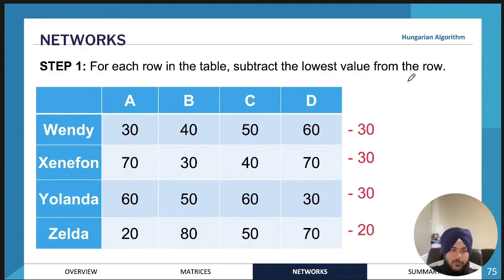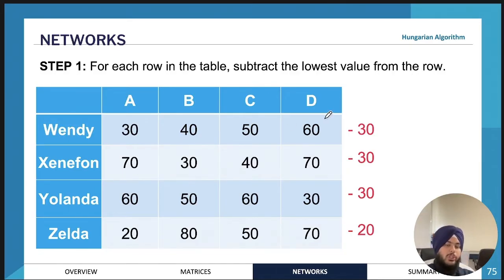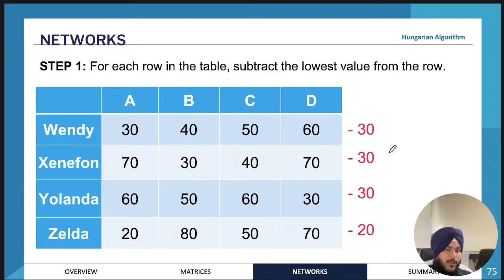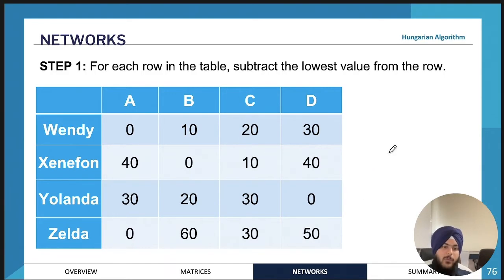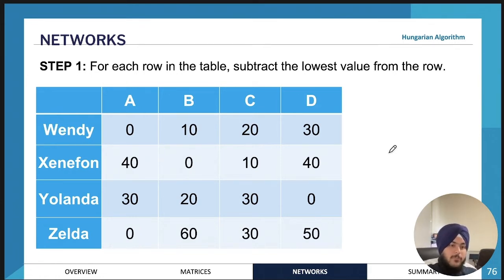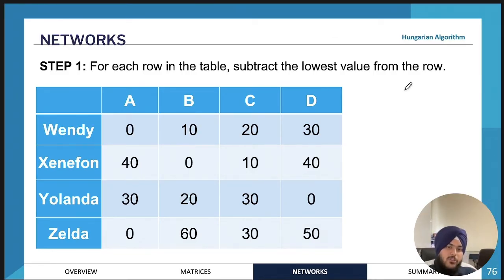Step one of the Hungarian algorithm: for each row, find the lowest number and subtract it from all numbers in that row. For example, in the first row the lowest number is 30, so subtract 30 from every entry. Similarly for the second row, the minimum is also 30. Once that's done you get a new table. Using matrices on your calculator for these subtractions can be very helpful.